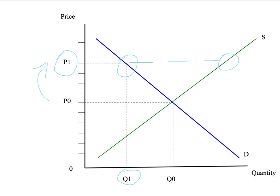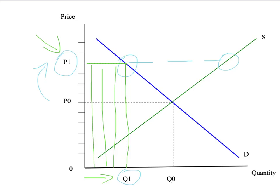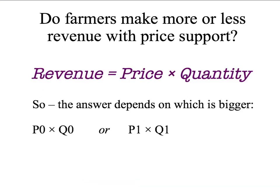We want to ask: does the amount of revenue that farmers earn go up or down after the wool price support scheme is put in place? The original amount of revenue is simply P0 times Q0, given by the red shaded area on the diagram. After the wool price support scheme is put in place, farmers receive the price P1 but only sell Q1 wool, so their revenue is P1 times Q1, given by the green shaded area. We want to know if the green shaded area is bigger or smaller than the red shaded area.